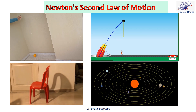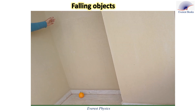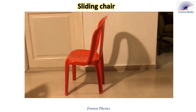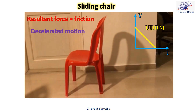Let's explore everyday situations demonstrating Newton's second law. An orange is released from rest; neglecting air resistance, the weight is the only force acting on it. According to Newton's second law, the freely falling object accelerates at a rate equal to the gravitational acceleration. When a chair is pushed along a frictional floor, the friction force is the net force, and according to Newton's second law, the chair decelerates until it stops.